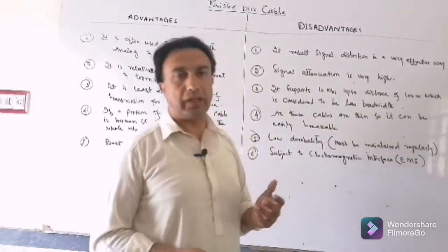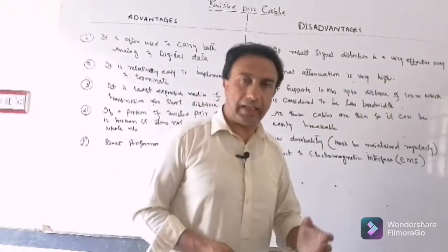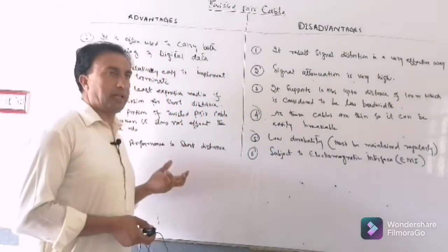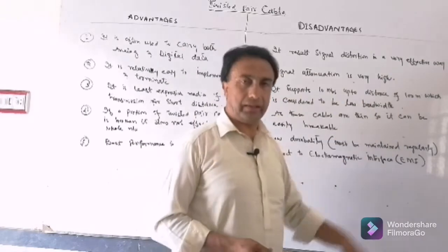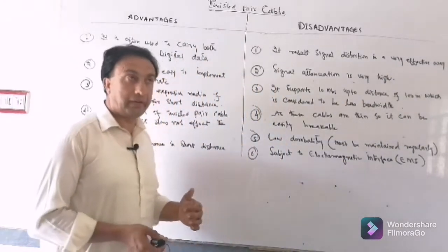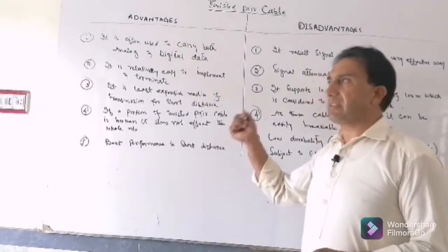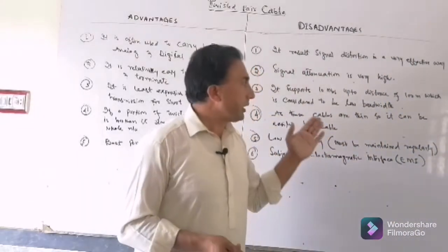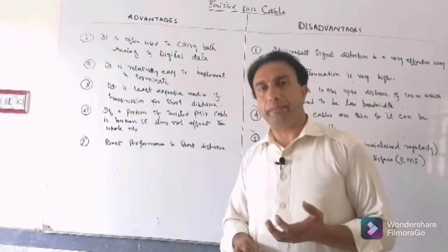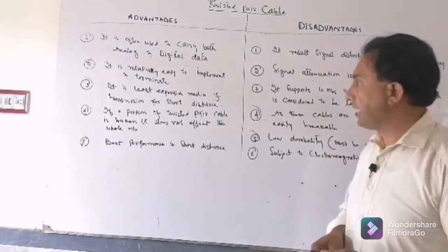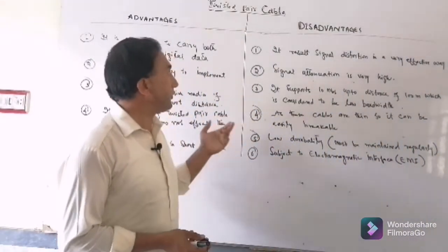Distort means the signal gets damaged — signal kharaab ho jate hai. Signal attenuation is very high in twisted pair cables. Attenuation means the signal becomes weak as distance increases. This is the main drawback of the twisted pair cable.